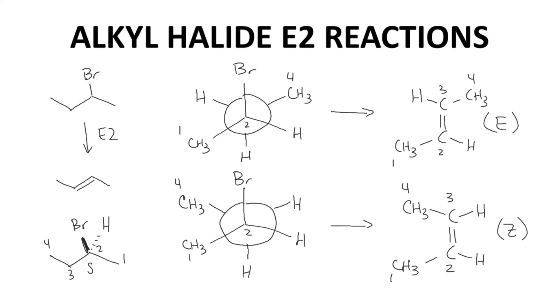The E isomer, however, will be the major product. The Newman projection that leads to the E isomer is more stable. It has fewer gauche interactions than the Newman projection that leads to the Z isomer. So the amount of the top Newman projection will be greater than the lower one in the reaction and we'll see more product forming from the top conformation.